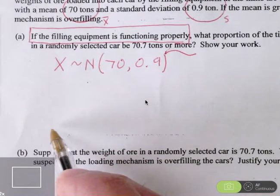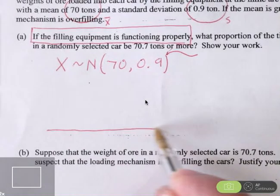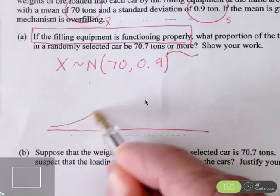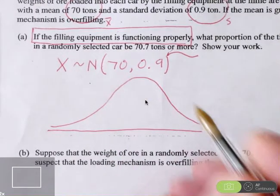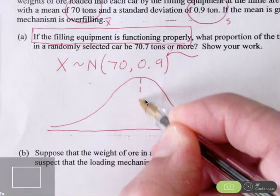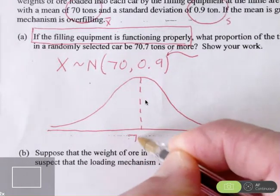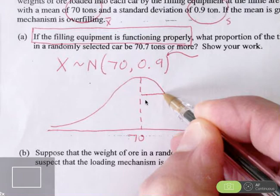We'll draw a little normal distribution and label it. Here's the mean of 70 tons and the standard deviation of 0.9 tons.